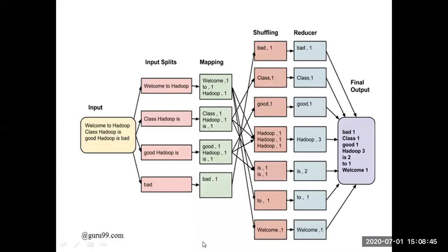In the first class of MapReduce, we took an example using text data where we tried to find out the frequency of each word. The original file is divided into small parts called input splits, and each split is given to one mapper.